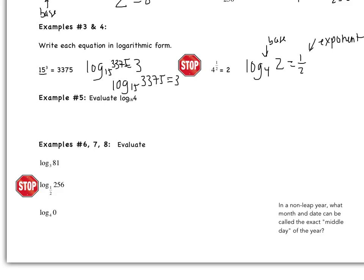So example 5 says evaluate log base 16 of 4. So I have log base 16 of 4. This is equal to some number. So I'm going to set it equal to x. Now logs are new for us. We're not really good with logs. So we're going to convert this to exponential form. 16 is our base. X is our exponent. This is all equal to 4. So log base 16 of 4 is equal to x. That's the same thing as 16 to the x equals 4.